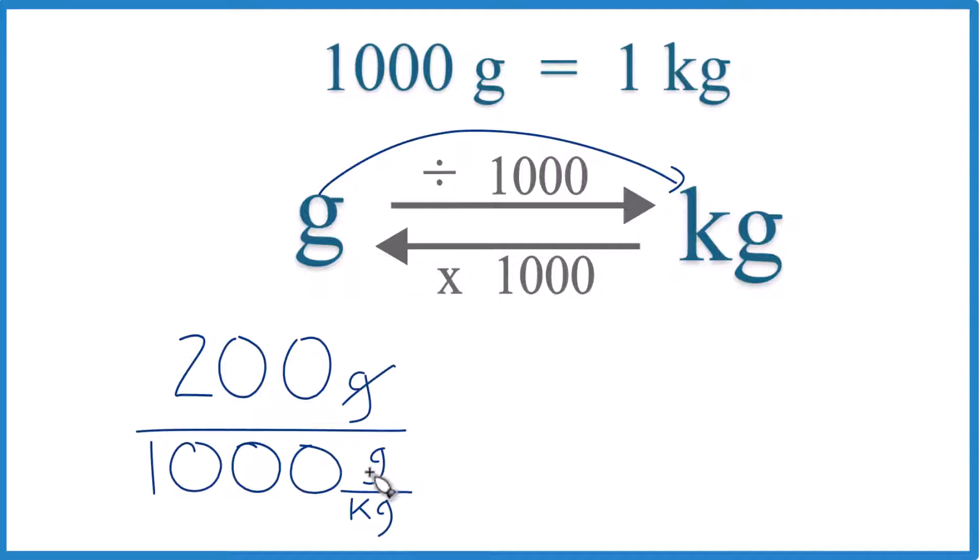So now grams will cancel out. We're left with kilograms. So we know we did it right. So if we go one, two, three, that gives us one. So we have to do it all up here. One, two, three, and we have 0.2.